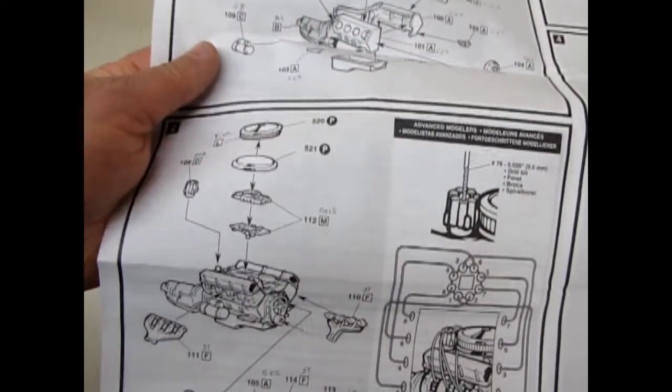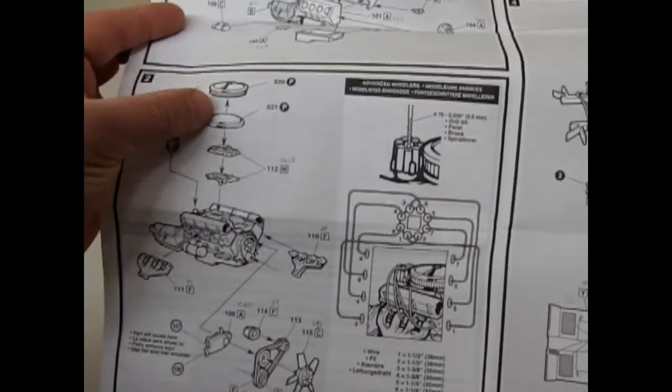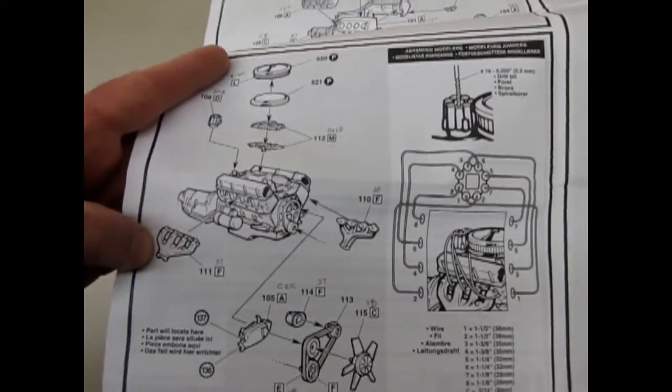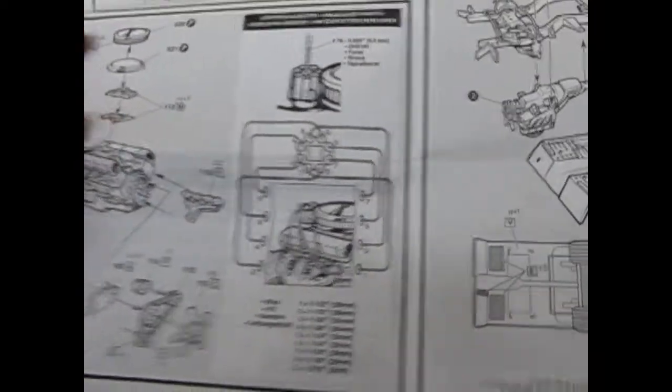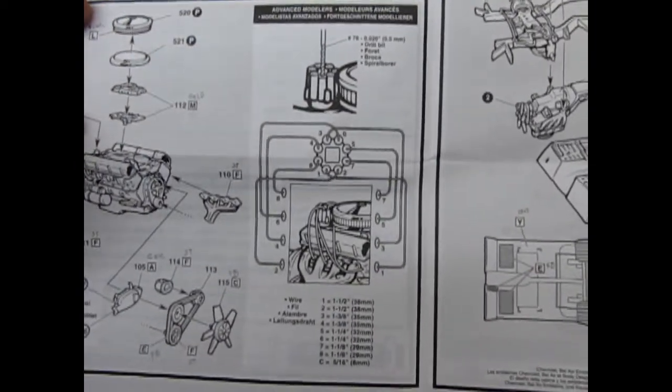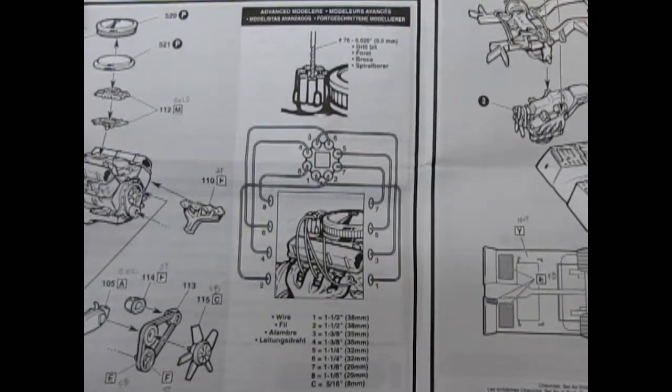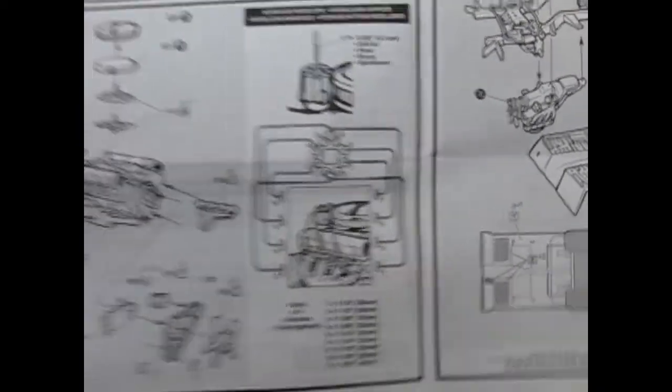Then here on the custom engine they give you a more modern air cleaner, a four barrel Holley, some extra exhaust manifolds and they also give you a wire set in here. You have to drill this out into your distributor but you can actually put the wires in the correct firing order as shown on this chart.